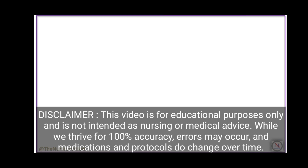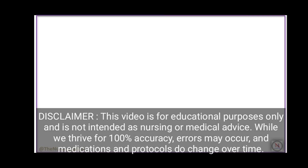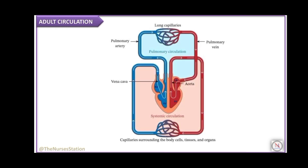In this video we will talk about the fetal circulation. Before looking into the fetal circulation, we will first see how adult circulation works. In human adults there are actually two circulations going on simultaneously: the pulmonary circulation and the systemic circulation. Deoxygenated blood from the whole body returns through the superior vena cava and inferior vena cava into the right atrium, and flows downwards into the right ventricle.